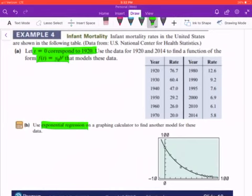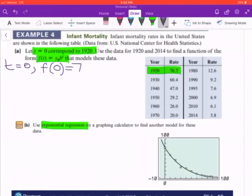If we look at this part of the table, it's giving us something similar as what we had on the previous problem. So for t equals 0, the output, the f of 0, is going to equal to 76.7.